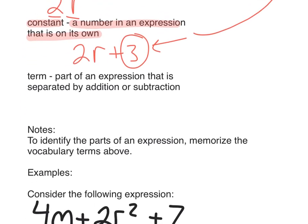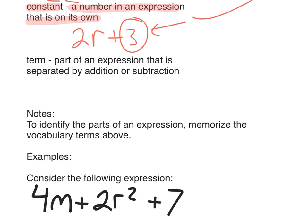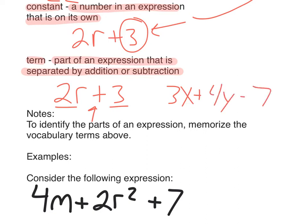Term. A term is a part of an expression that is separated by addition or subtraction. So, in the example I just used above, 2r plus 3, there are two terms, because this and this are separated by an addition sign. If I have 3x plus 4y minus 7, there's three terms, because these three sections are separated by a plus or a minus, addition or subtraction. It's the sections of a problem.